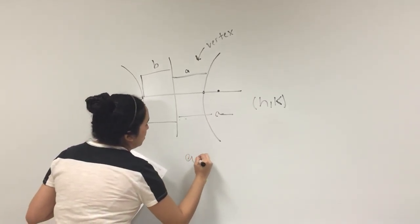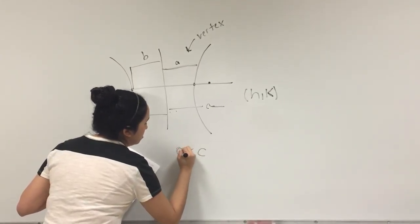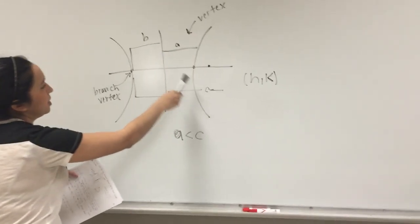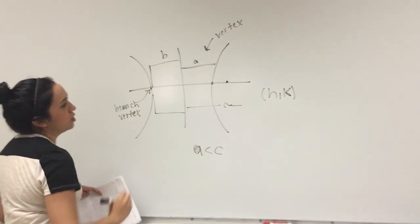That means that A is always less than C. And A and C may vary depending on the hyperbola, but they're always constant. So back to the PowerPoint.